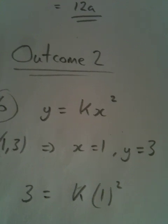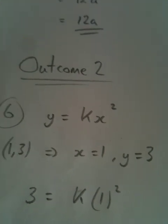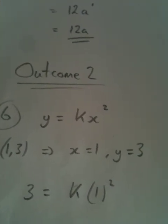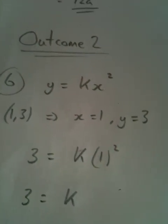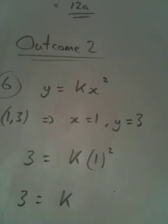So if we substitute into the equation that we're given, y equals kx squared becomes 3 equals k times 1 squared. 1 squared is 1, so it gives the value of k to be 3.